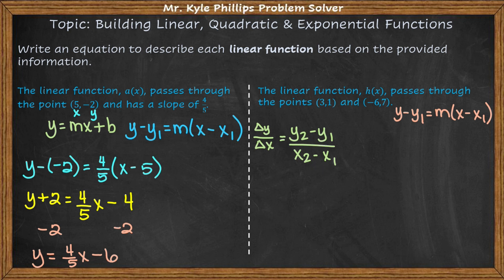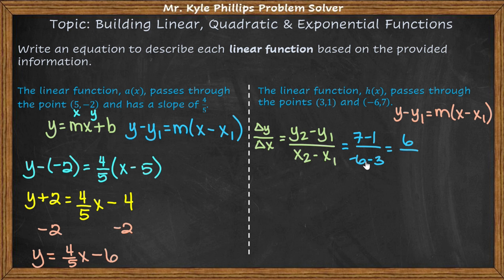So I have seven minus one for the change in y, and negative six minus three for the change in x. Seven minus one is six; negative six minus three is negative nine. This gives us negative two-thirds. This is my slope — negative two-thirds, that's my value of m. And I have coordinate points, so now I can go back to point-slope form to write it in standard form.